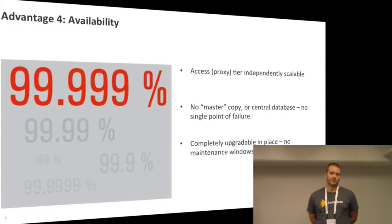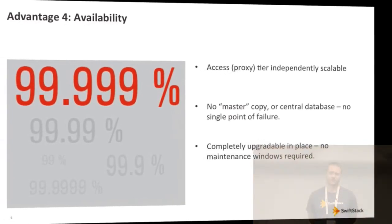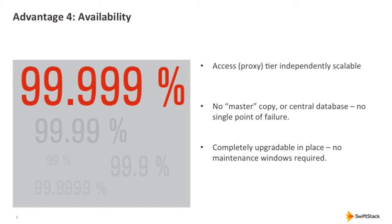Next is availability. Swift was designed from a web services model where people need access to their data. The proxy tier, which is what's leveraged to access that data, can scale independently of the storage tier, which is the durability part we've talked about. As an extreme example, if an archiving scenario exists where lots of data is going into the system but only a small amount of concurrency exists — maybe one application is reading and writing that data — the availability in the proxy tier could be relatively small, maybe just a couple of machines, whereas the storage nodes themselves may be hundreds or thousands of machines to handle all that data.